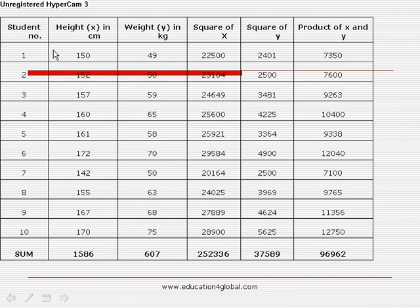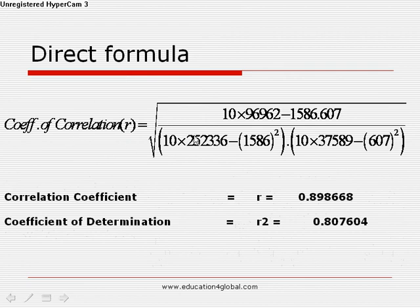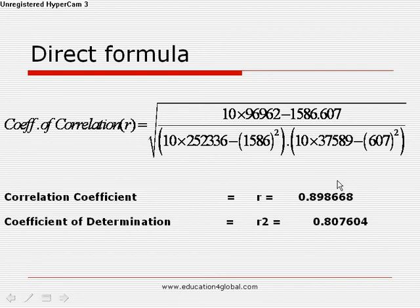Here we consider 10 students with their weights and heights — height in centimeters and weight in kg — along with the product of x and y. Using the direct formula: r equals [n·Σxy minus Σx·Σy] divided by the square root of [n·Σx² minus (Σx)²] times [n·Σy² minus (Σy)²]. Solving this formula, the value of r is 0.898668. So this is high degree positive correlation; it is not perfect because for perfect correlation the value of r should be 1.